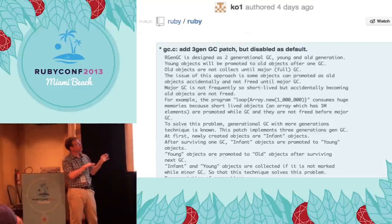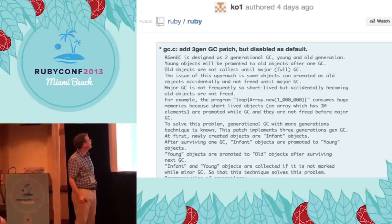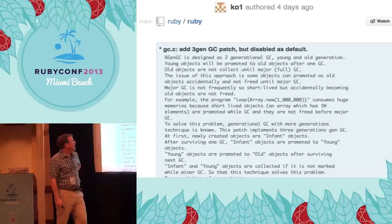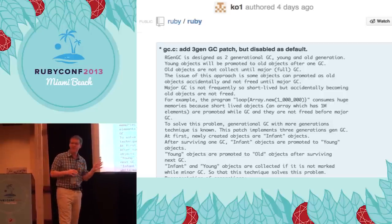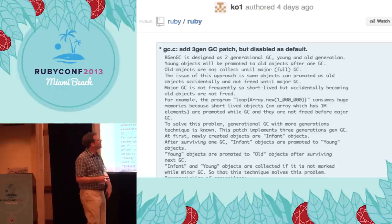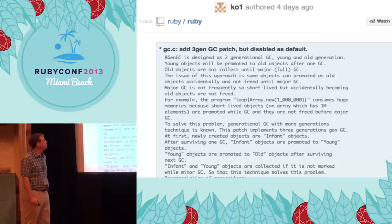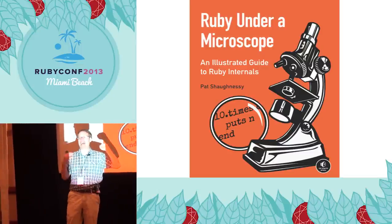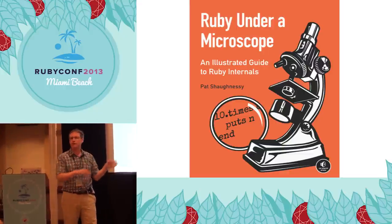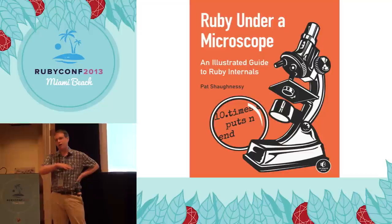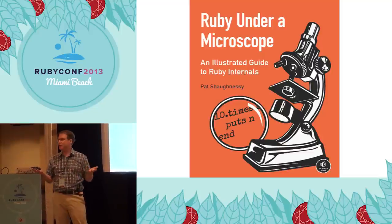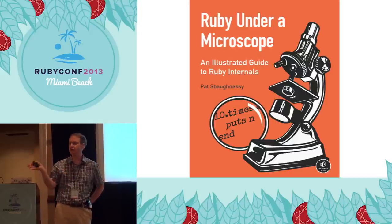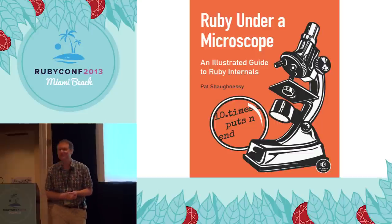I just learned a couple days ago that Koichi just committed something to Ruby that's going to use three generations — though he's still evaluating whether it's a good idea. This is still under development and might change in the next few weeks or months. Anyway, that's it. My name is Pat Shaughnessy. I just wrote a book called Ruby Under a Microscope, which describes how Ruby works internally — this talk was a synopsis of the last chapter on garbage collection.